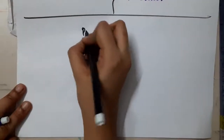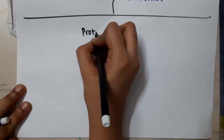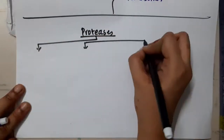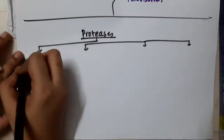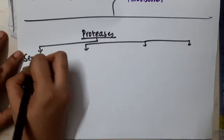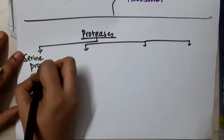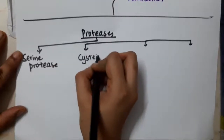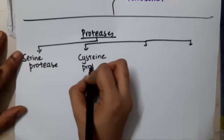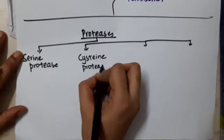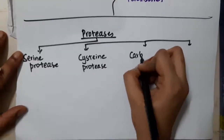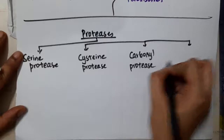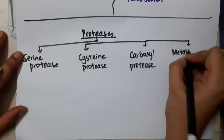Hello friends. Let us now learn the classification of proteases. Proteases are of four types: serine protease, cysteine protease, carboxyl protease, and metalloprotease.